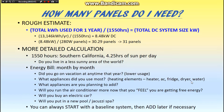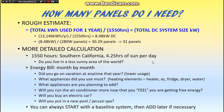What appliances did you use the most? Heating elements take the most energy — heater, air conditioner, refrigerator, dryer, electric water heater. What appliances are you planning to add? Are you adding a new energy-efficient fridge, air conditioning, electric dryer, or electric water heater? If you're going from gas to electric, you'll probably need to double or even triple your system size.